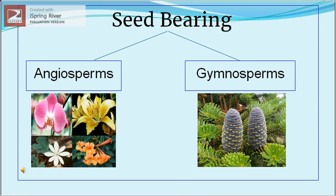While creating this presentation, it has been kept in mind that each slide smoothly translates into another slide by giving the categories and sub-categories of plant classification visually supported by perfect pictures.